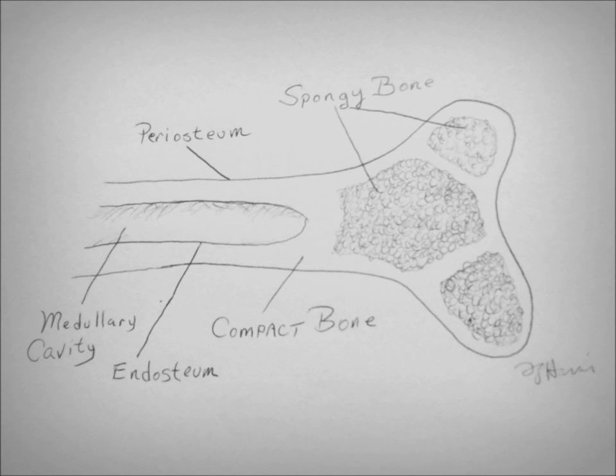The bulbous ends of long bones are filled with spongy bone, which is filled with millions of small cavities and passages. These cavities produce, and are filled with, red bone marrow.